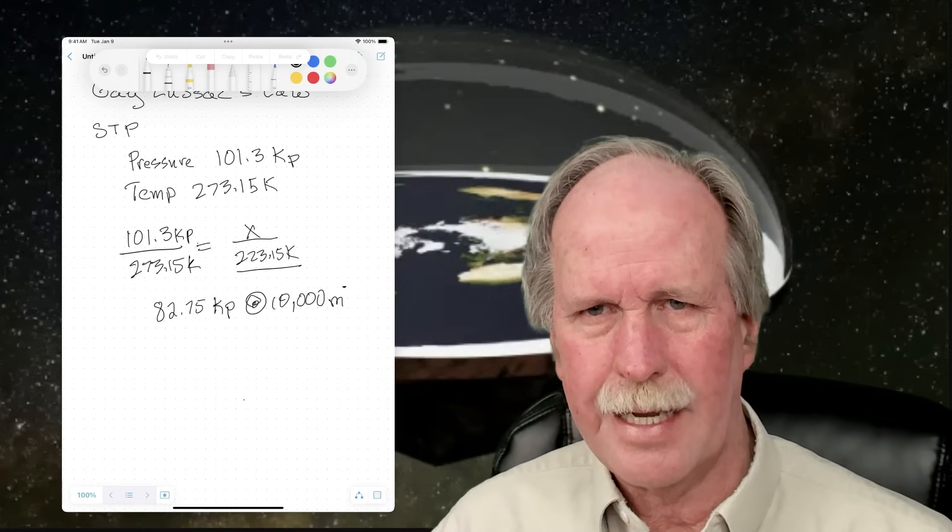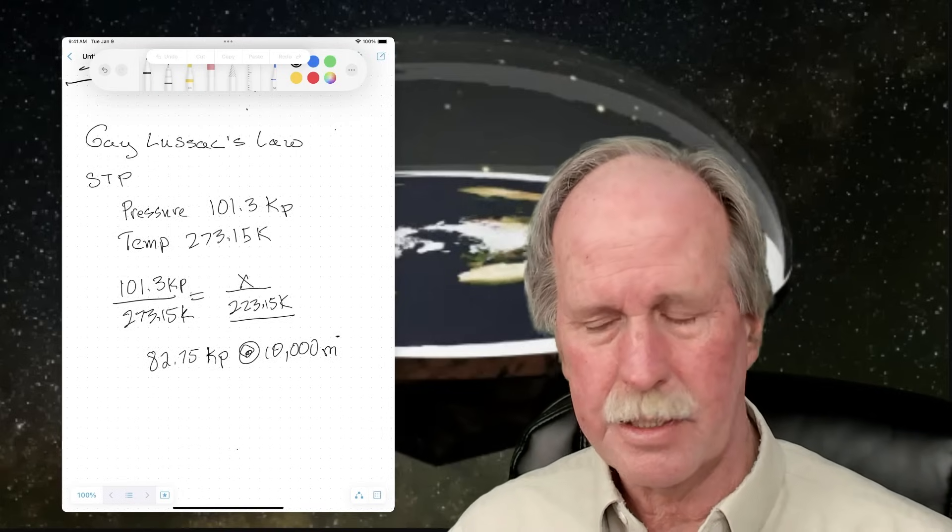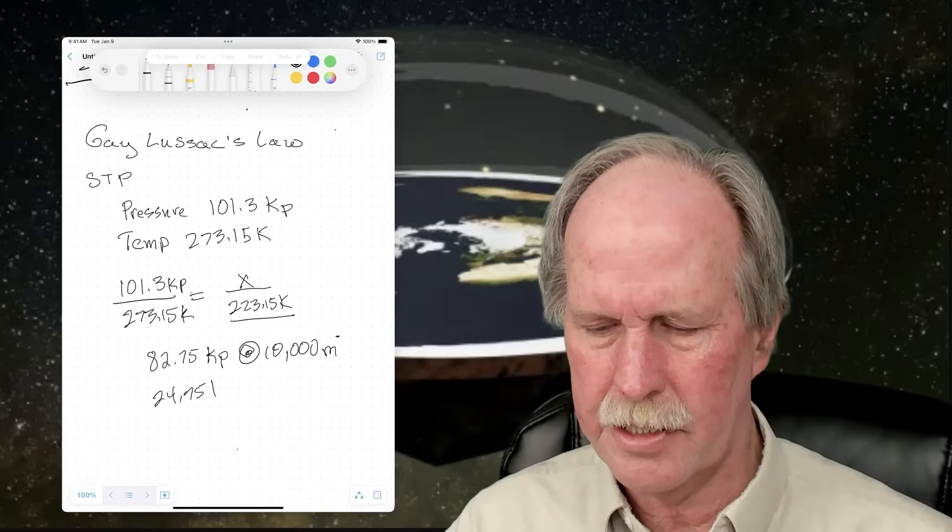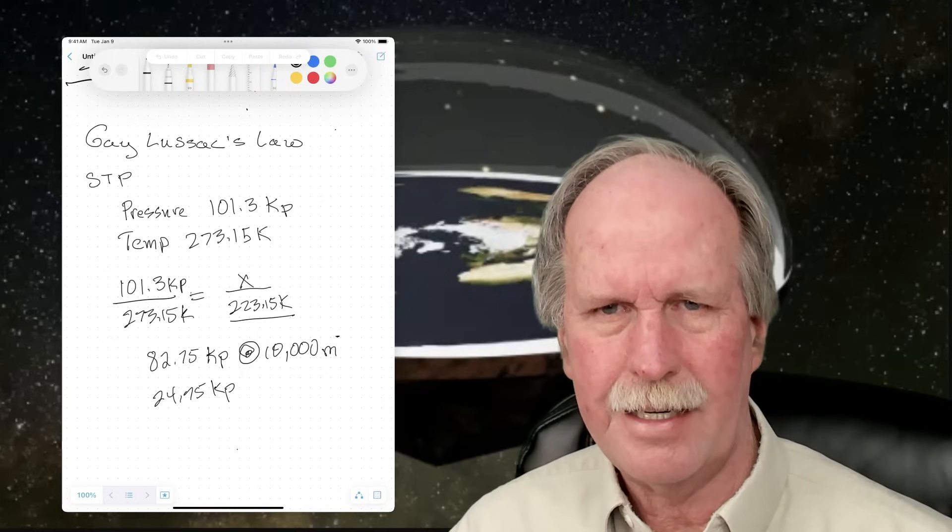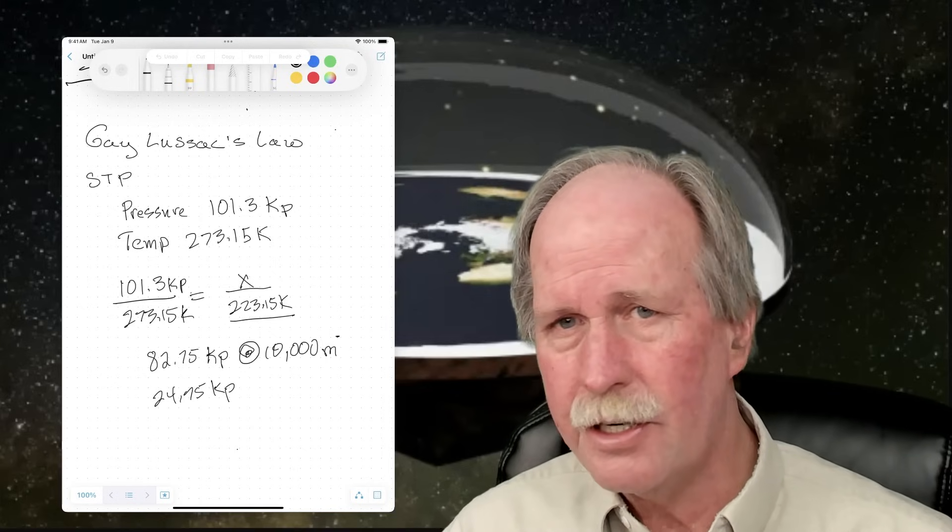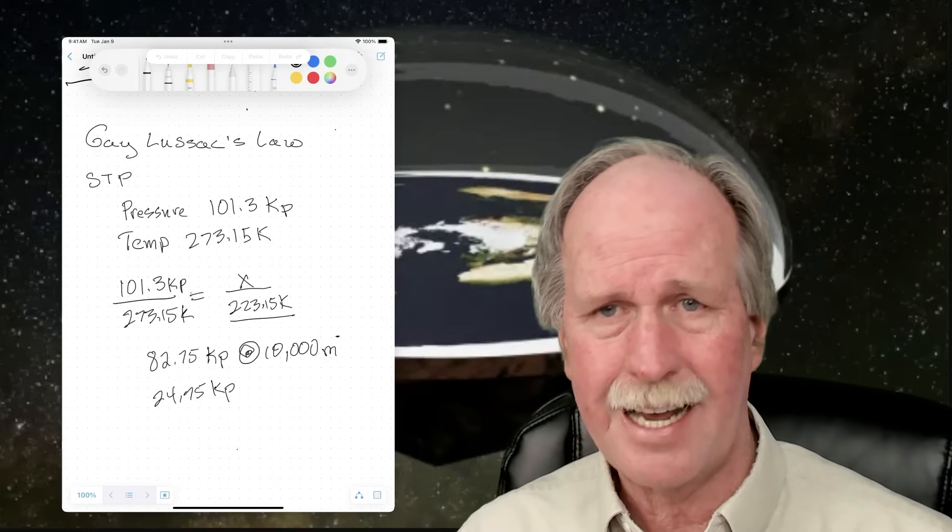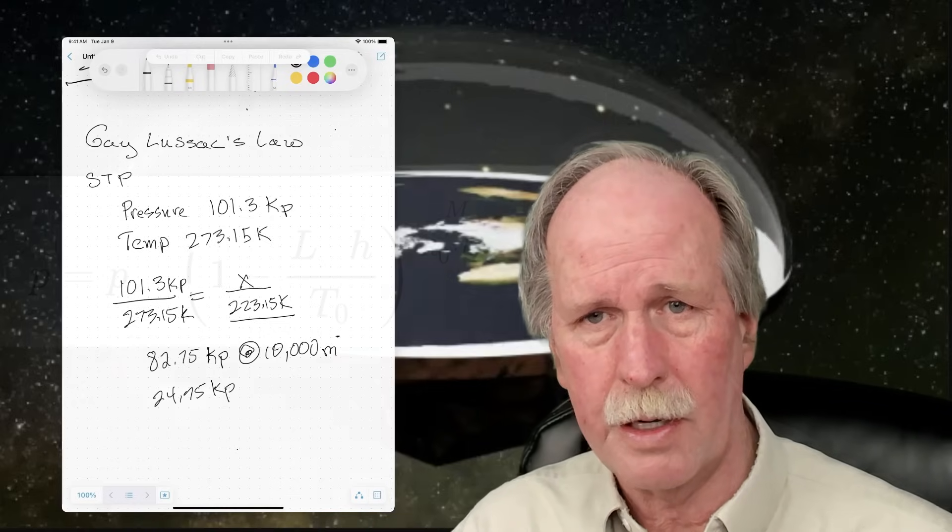Pretty straightforward equation. But what is the actual pressure at 10,000 meters? Well, it's actually 24.75 kilopascals. So why is it different? Again, look back at the definition of an ideal gas. Part three of that definition is that there are no outside forces acting on the gas. We have outside forces acting on our atmosphere. Therefore, it's not an ideal gas. It simply doesn't work.